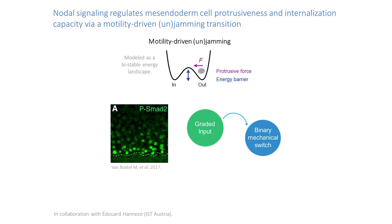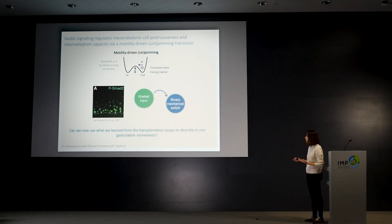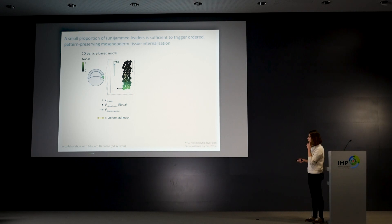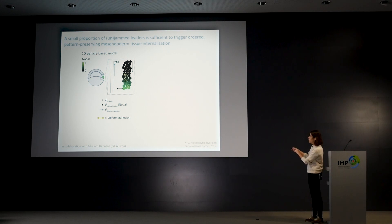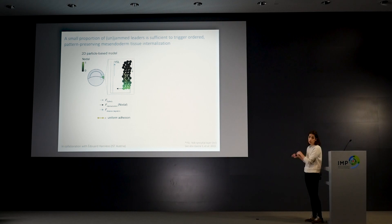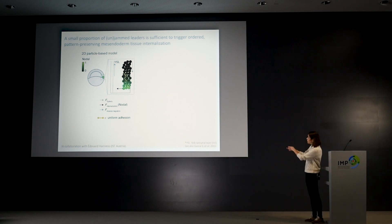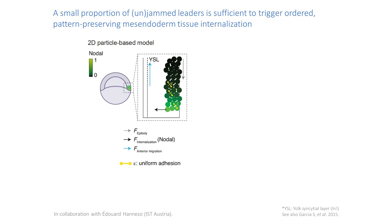Everything I've told you so far was in the transplantation context, but I wanted to understand the movements at the tissue scale — so did we actually learn anything from these transplants that can help us describe the movements in the embryo in vivo? Together with Edoardo Anenzo, we modeled what happens in the embryo and tried to simulate these events using a 2D particle-based model where each particle represents a cell. We have three main forces mimicking the embryo: epiboly forces spreading cells downwards, internalization forces, and migration forces upwards once the cells are inside. The key ingredient is the nodal signaling gradient measured experimentally, with a linear relationship between internalization forces and nodal levels.